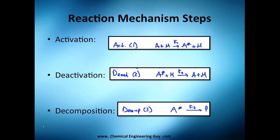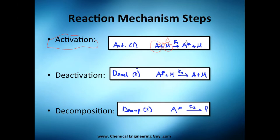As noted in the previous video, we get an activation step. Essentially you have A and M — M could be another molecule of A — they collide, and A gets activated. That's why this step is called activation.